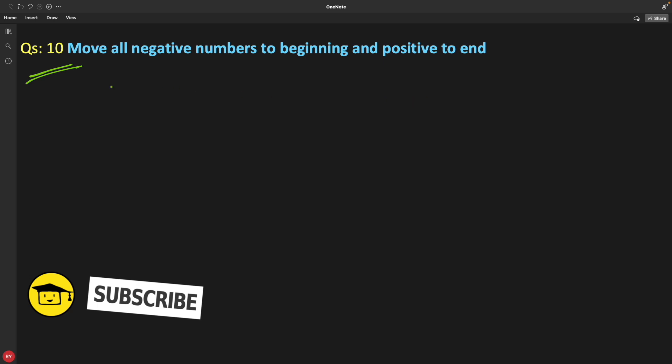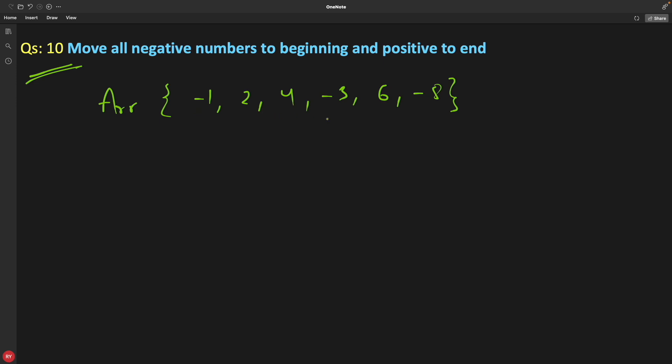So let me draw an array for you. If this is your array, we have negative and positive values mixed up. What we want is something like this: minus 1, then minus 3, minus 8, and then 2, 4, 6. We need something like this.